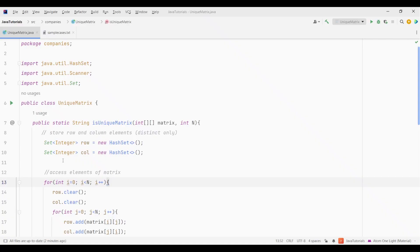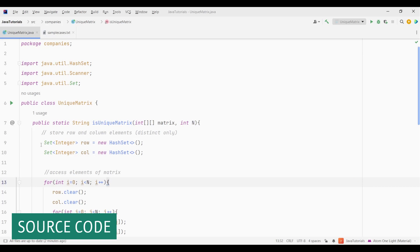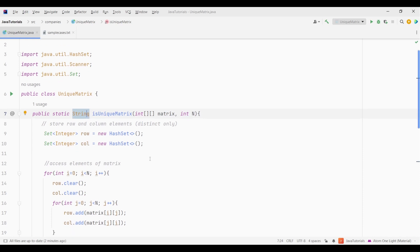Now let's see the code to solve this problem. First I have created a function called isUniqueMatrix which has two arguments - one is an integer 2D matrix array and an int variable called n. The return type of this function is string since we need to return string true if the matrix is unique or the string false if it isn't.